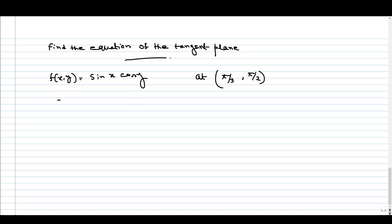First, we calculate the partial derivatives. Finding the partial derivative with respect to x gives us f_x = cos(x)cos(y). For f_y, we get -sin(x)sin(y).